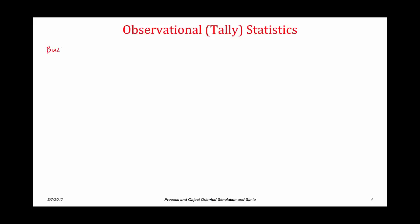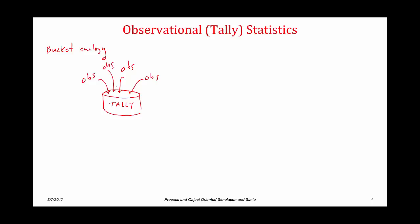The way I usually think about observation or tally statistics is by something I'm going to call the bucket analogy. In this analogy, we have this big bucket — which in Simio is called a tally. We have a set of observations, and when we observe something, we simply toss that observation into the bucket. We toss all these individual observations into the bucket, and then Simio computes descriptive statistics such as the mean, max, min, and we can use confidence intervals — all of those statistics based on the population of observations tossed into the bucket.